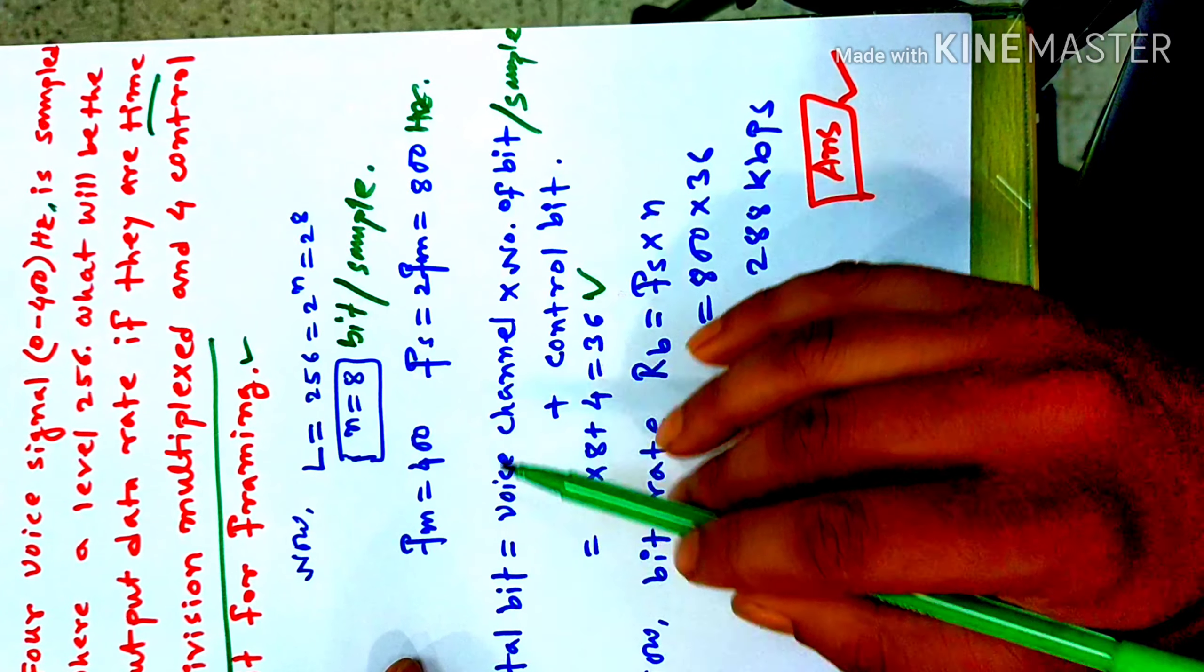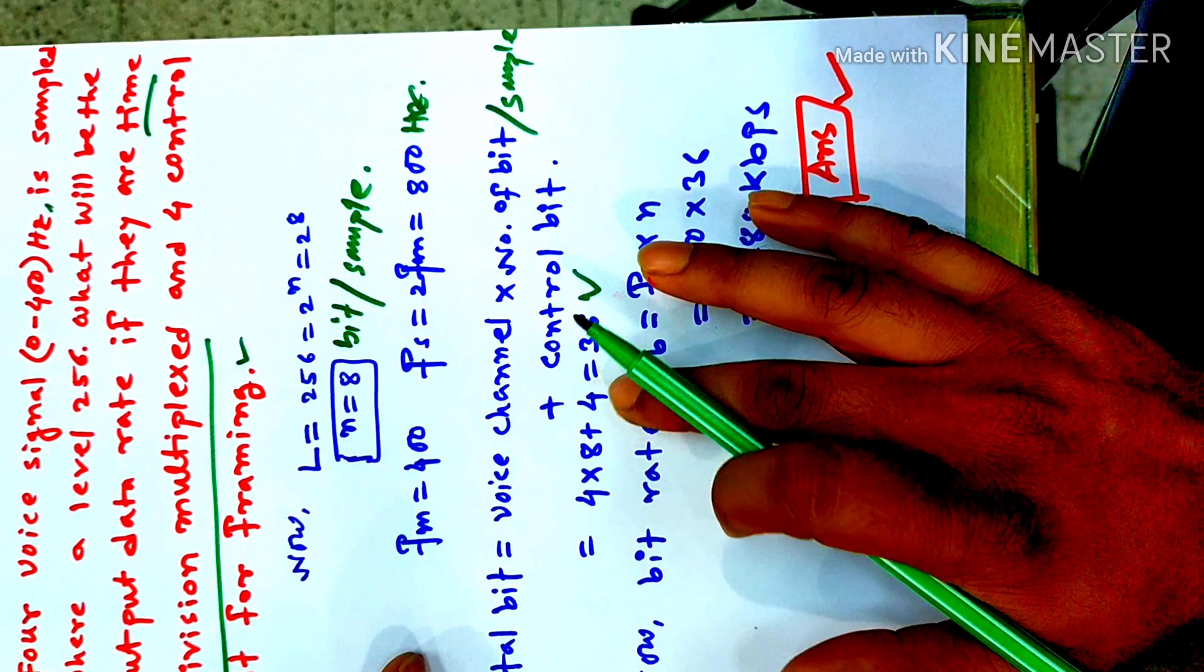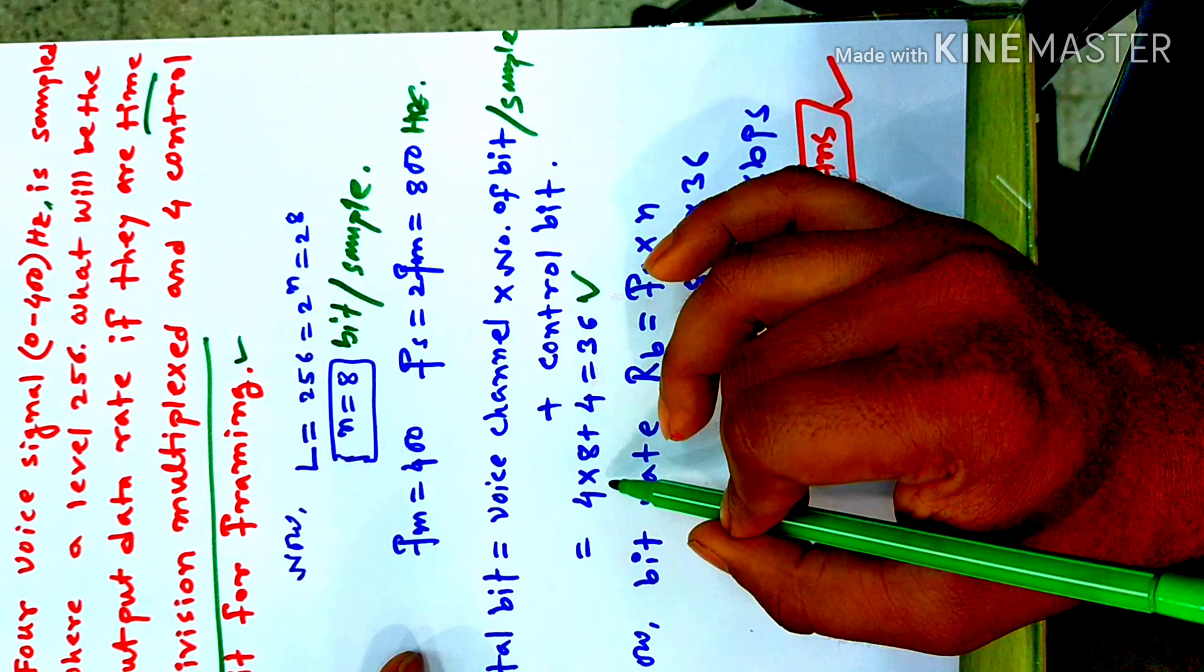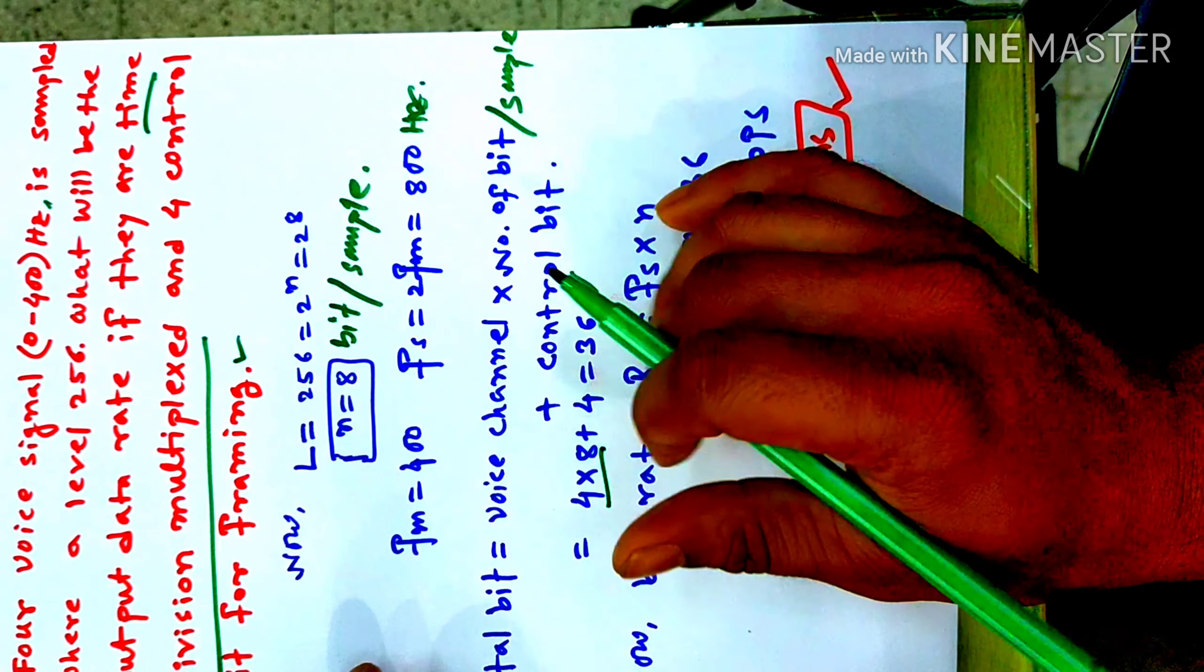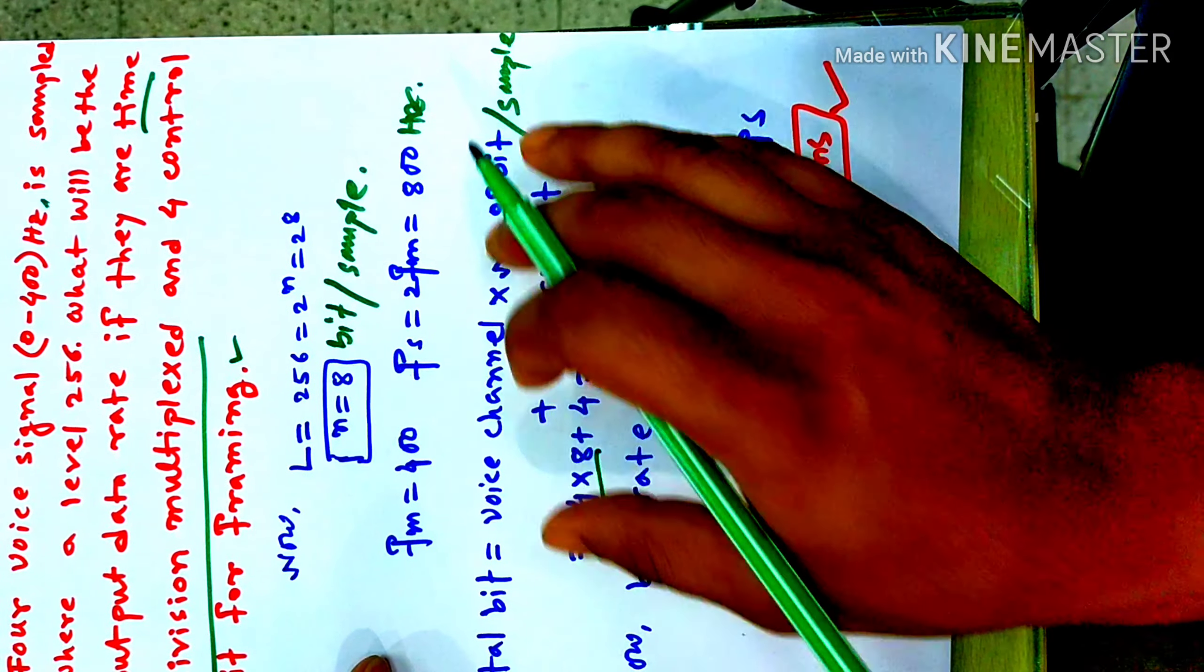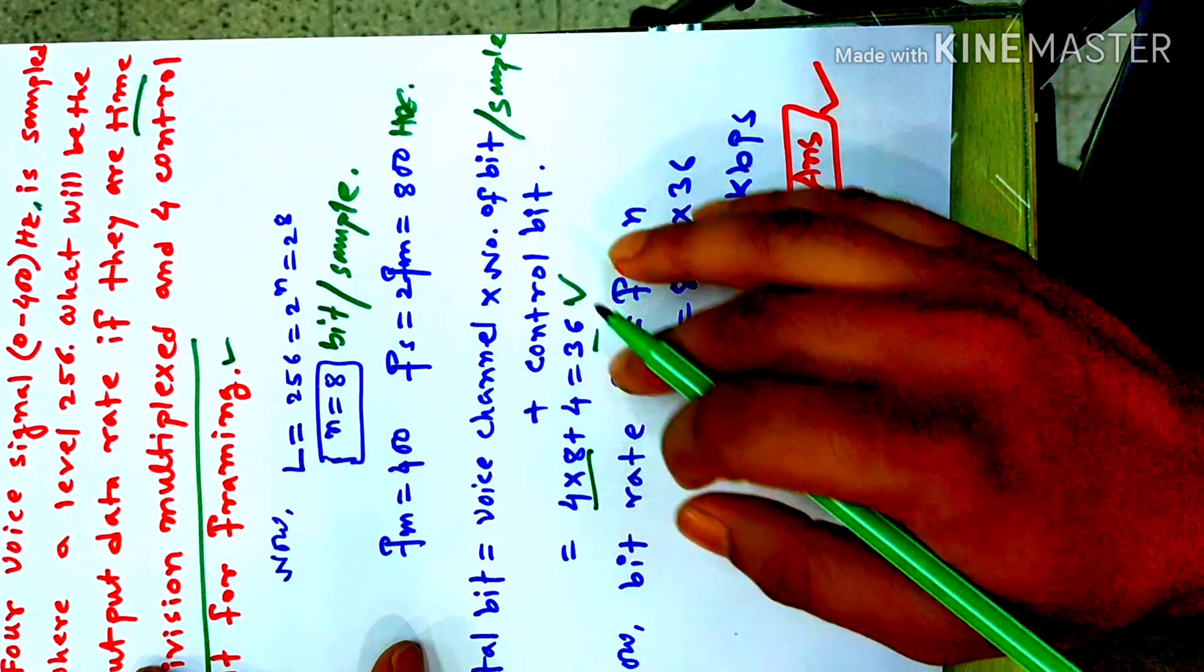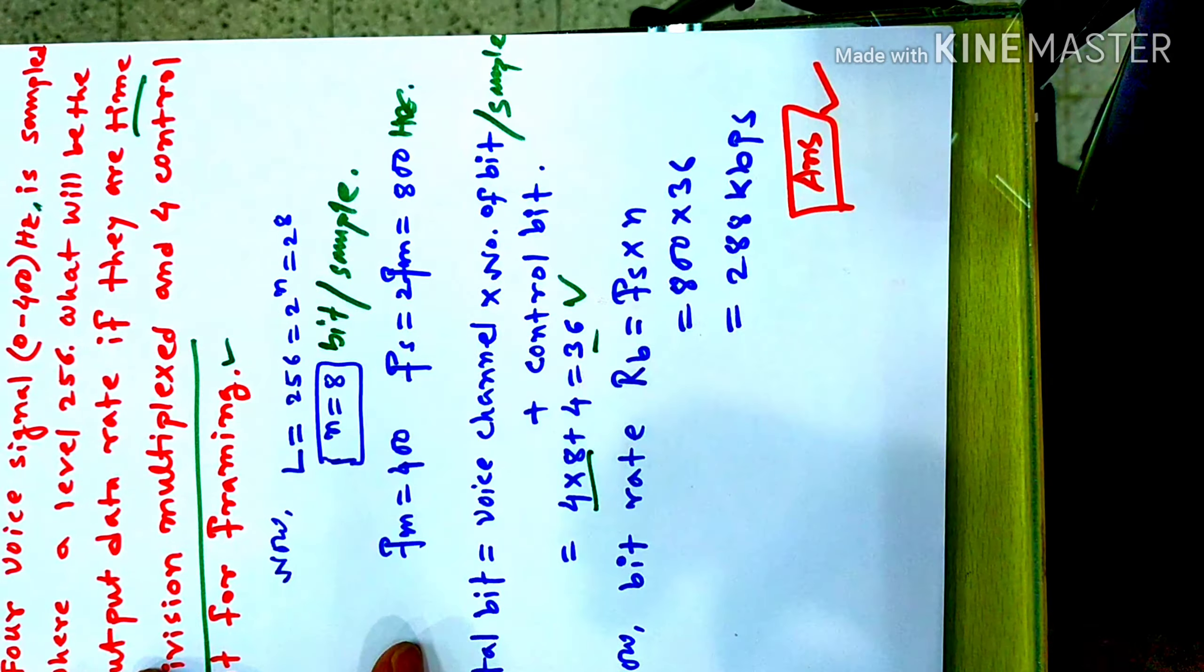Total bit equals voice channel into number of bits. We have 8 bits, even the 8th bit. We add the control bit. Total bit is 36. Total bit equals voice channel into number of bits plus control bits. This is the total bit.